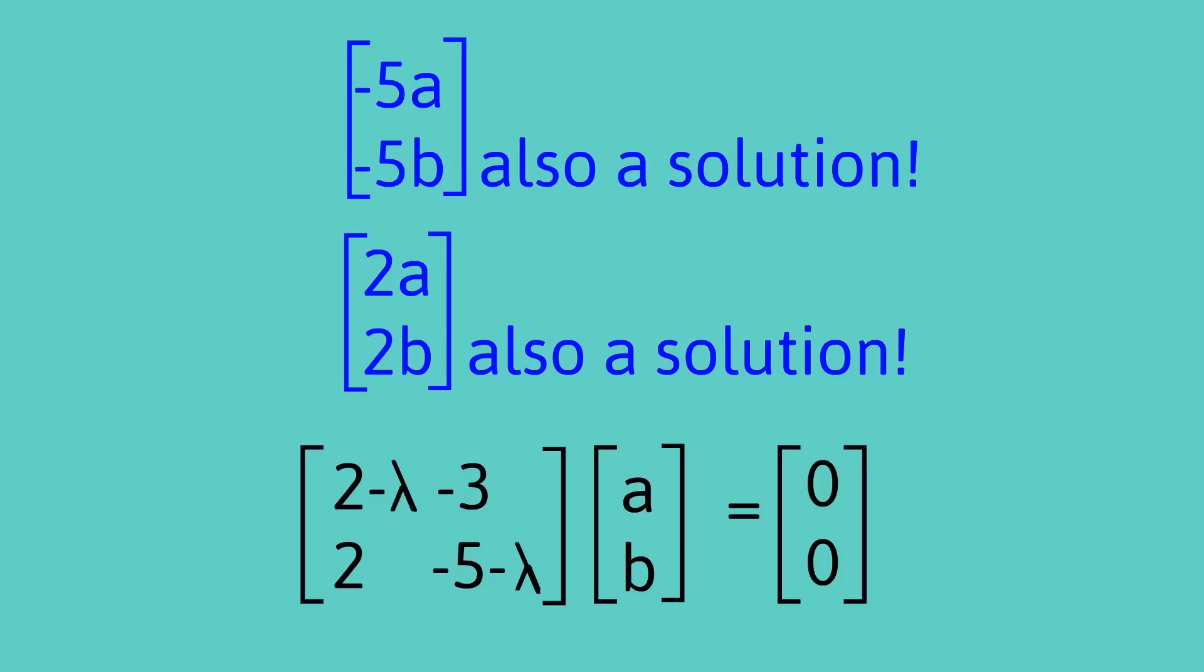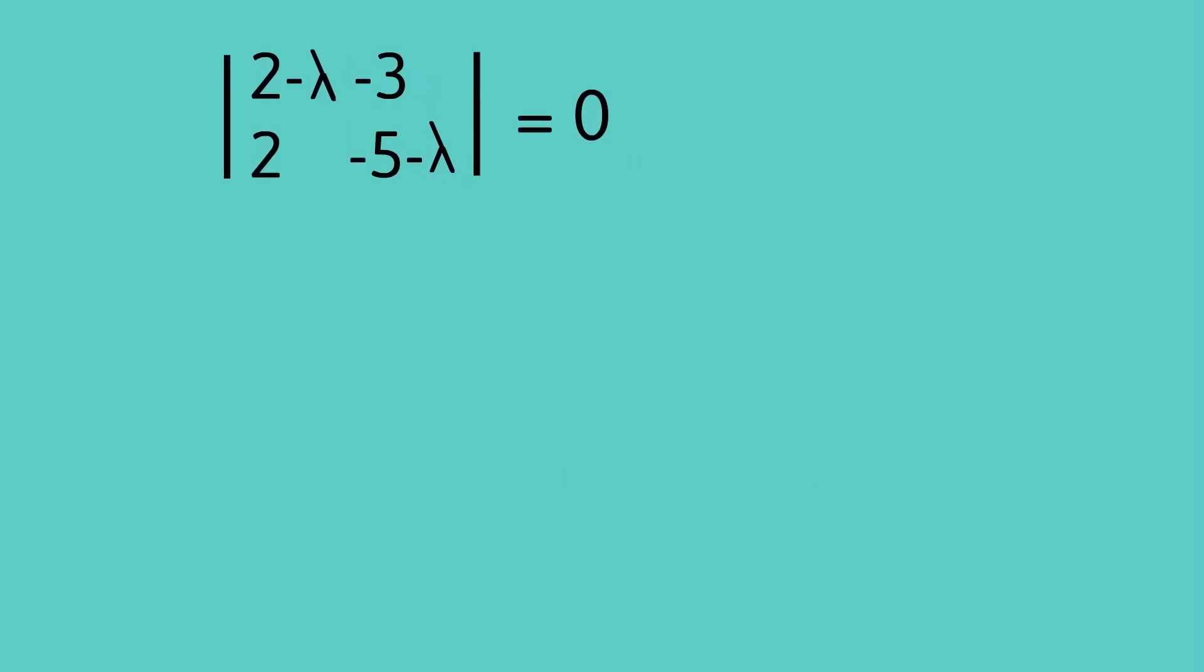So there's more than one solution here and because of that it means the determinant of the matrix must equal 0 and that gives us an entry into what the eigenvalues are.